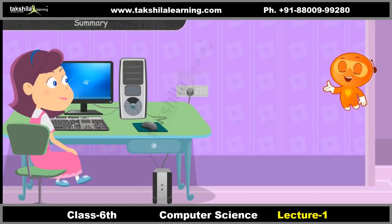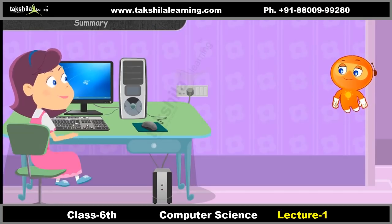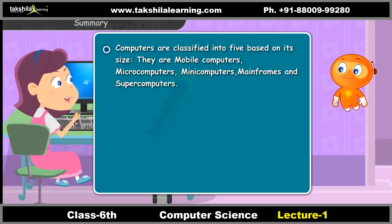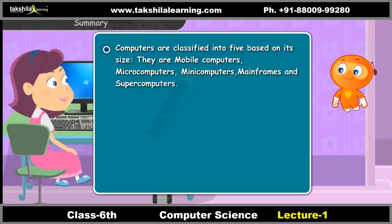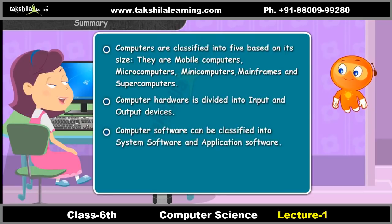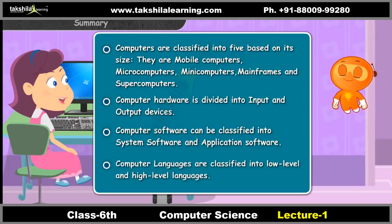Shall we summarize what we learned? Yes! Computers are classified into five types based on their size: mobile computers, microcomputers, mini computers, mainframes, and supercomputers. Computer hardware is divided into input and output devices. Computer software can be classified into system software and application software. Computer languages are classified into low level and high level languages.